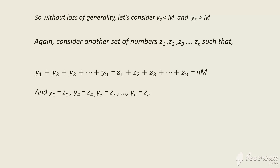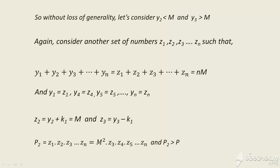We do the same thing as before: increase y₂ by a constant k₁ to make z₂ = M, and decrease y₃ by the same constant k₁ to get z₃. Taking P₂ = z₁ · z₂ · z₃ · … · zₙ, we have z₁ = M and z₂ = M, so P₂ = M² · z₃ · z₄ · … · zₙ. Since the product is decided by z₂ and z₃, and z₂ · z₃ > y₂ · y₃, we get P₂ ≥ P₁ > P.